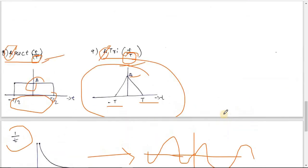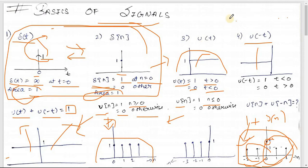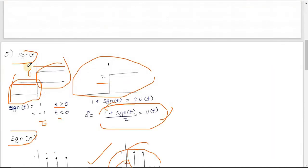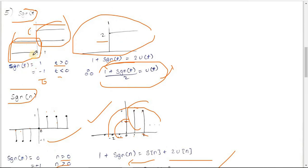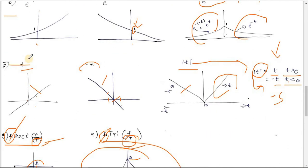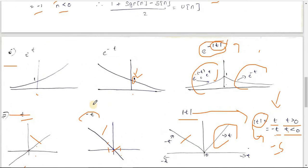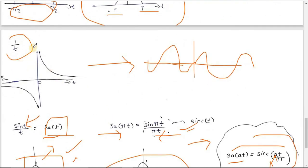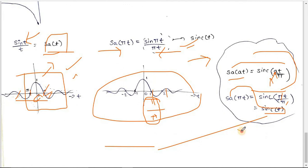To conclude: we covered the delta function, unit step function (continuous and discrete), signum function and its relation to u(t) and u[n], exponential signals including e^(-|t|), rectangle and triangular functions, 1/t, and finally the sample and sinc functions with the conversion formula. That's it — thank you!